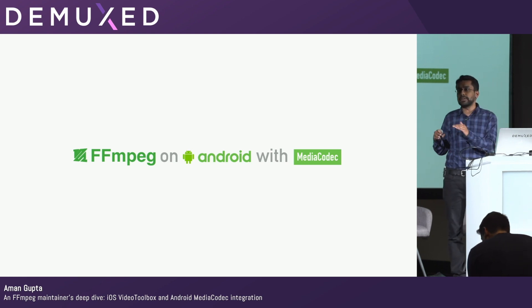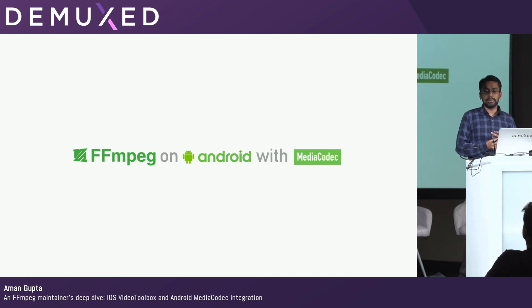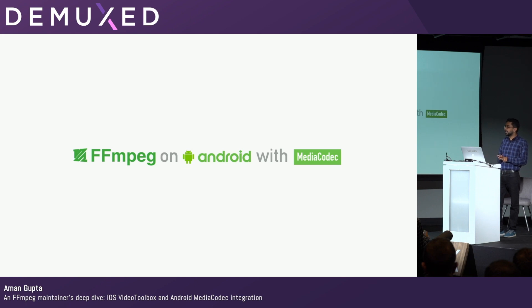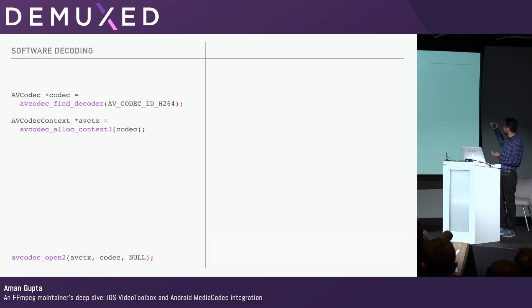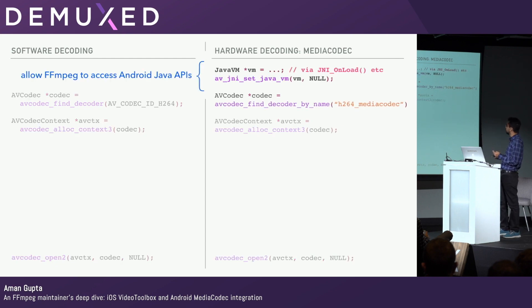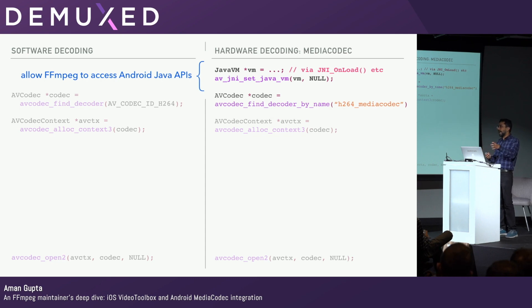Now let's look at Android. On Android there is a library called MediaCodec — that is the way things work on Android if you want to use the hardware decoding APIs. These are generally Java-based APIs; you can use them via JNI, and on newer Android versions there are NDK equivalents as well. Comparing software decoding to MediaCodec on the right, there's a little bit more involved. The first thing you have to do is pass in your Java VM context, because all of these APIs — at least as implemented in FFmpeg — are JNI-based. So you have to pass your Android app's Java context into FFmpeg so that it can introspect, pull out those APIs, and call them.